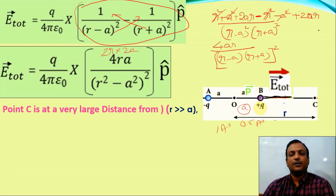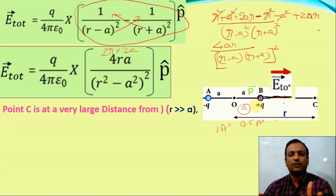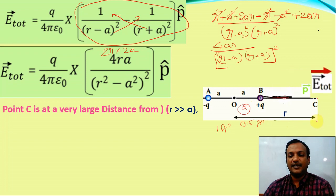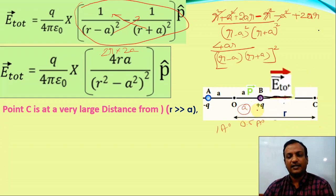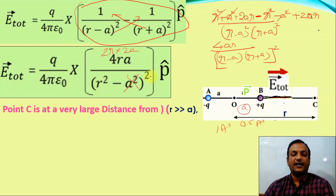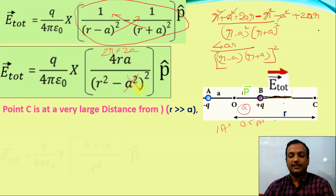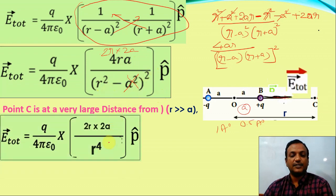Because r is very large and a is very small, we can approximate r² minus a² as approximately r². So the denominator simplifies to r² whole square, which is r⁴. This gives us a simplified expression.